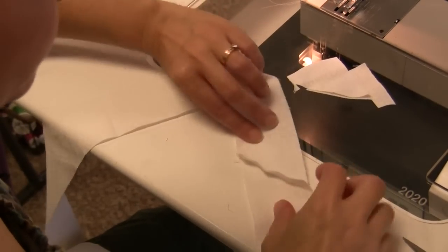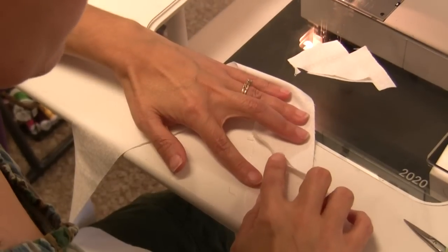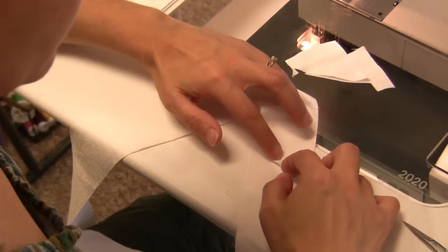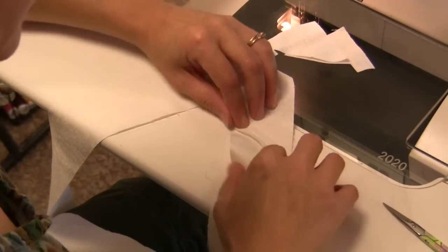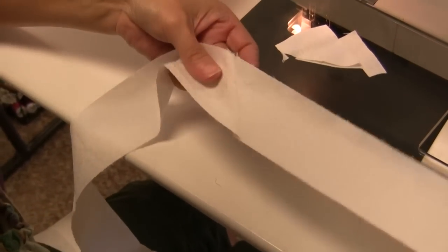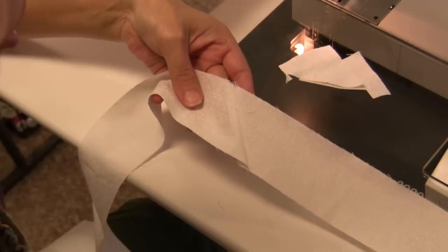We'll take it to the ironing board and we'll press that seam open. Once that seam is pressed open, you'll have a nice join. You do that with all your strips.